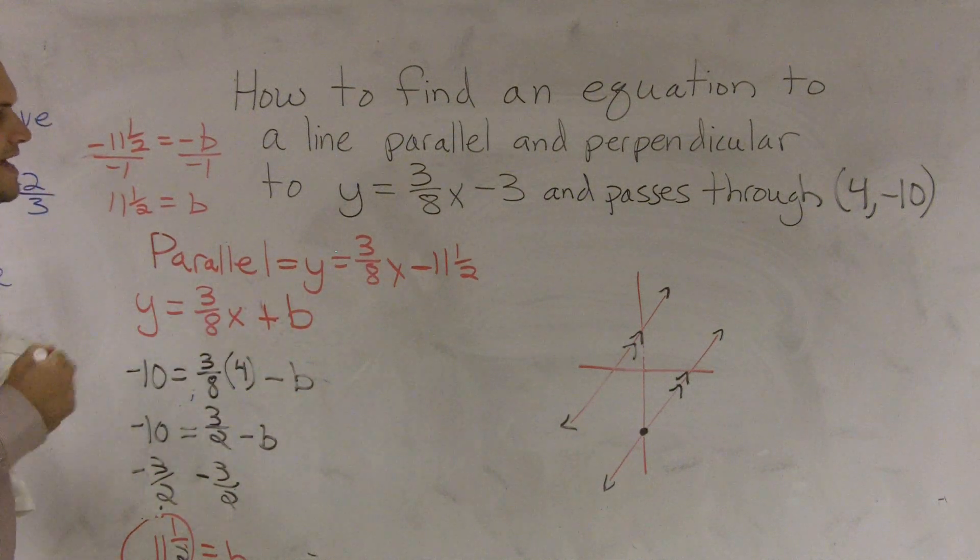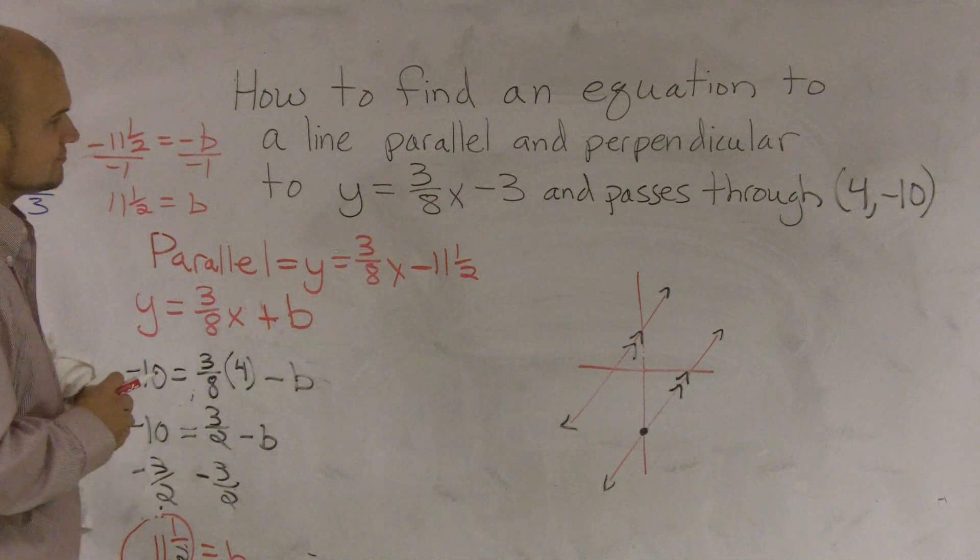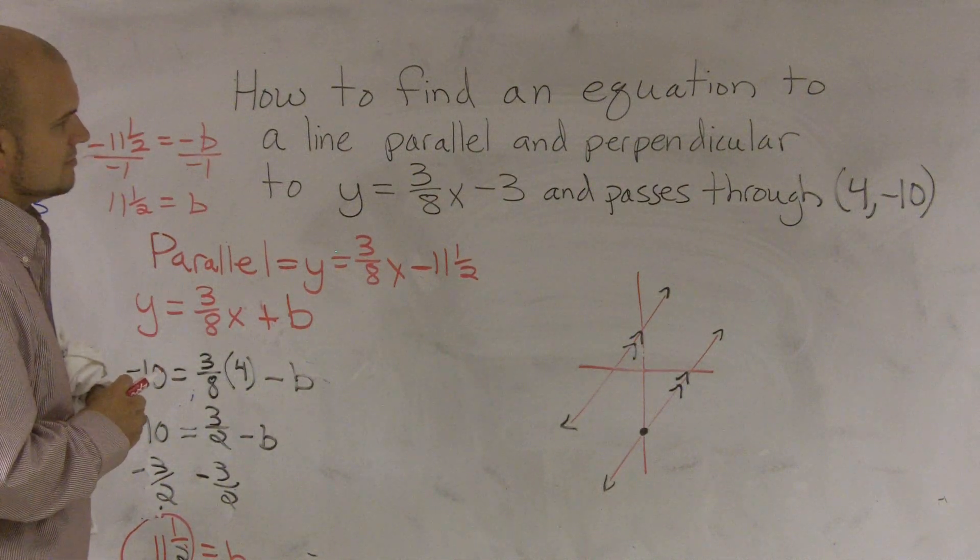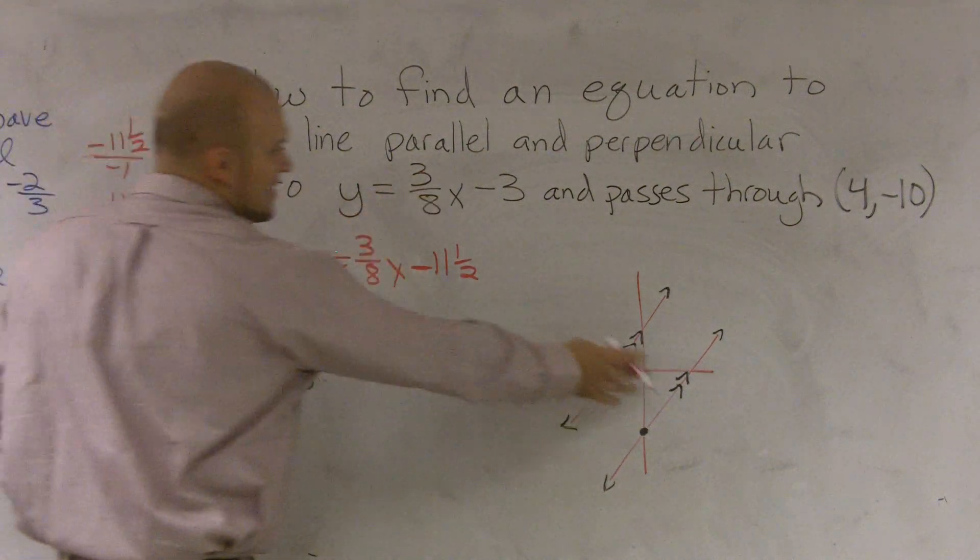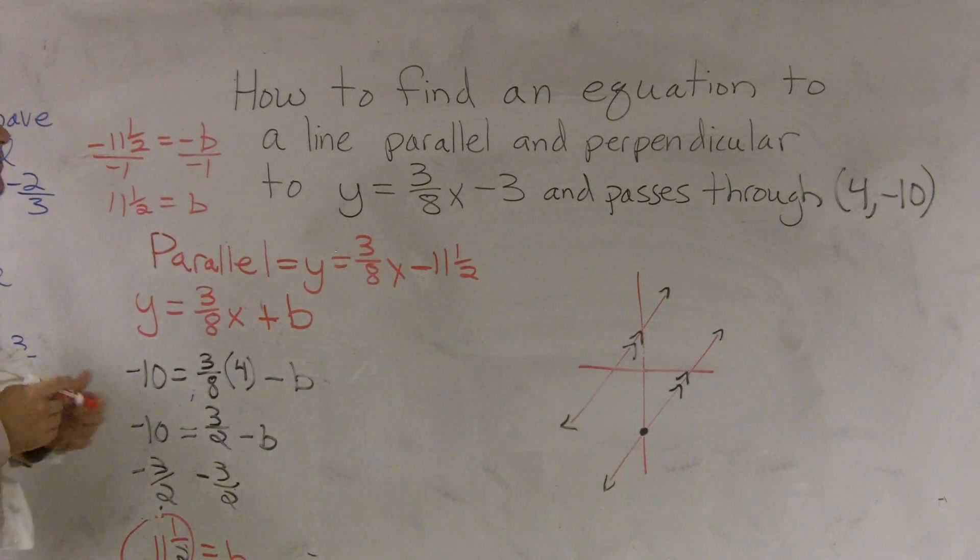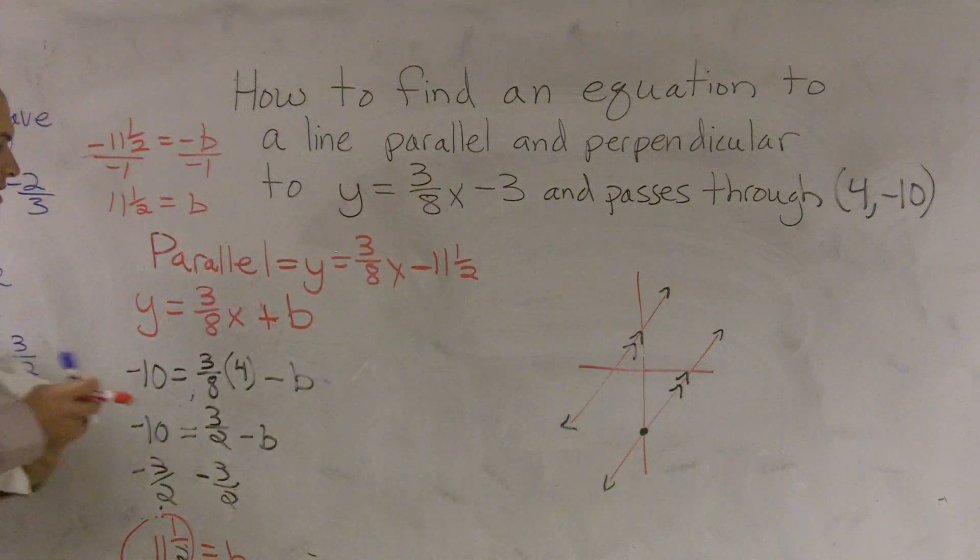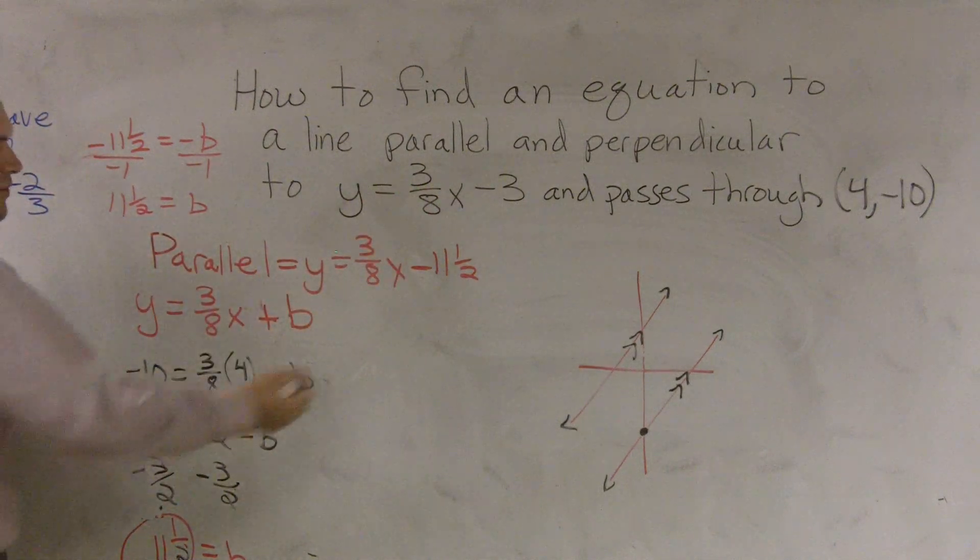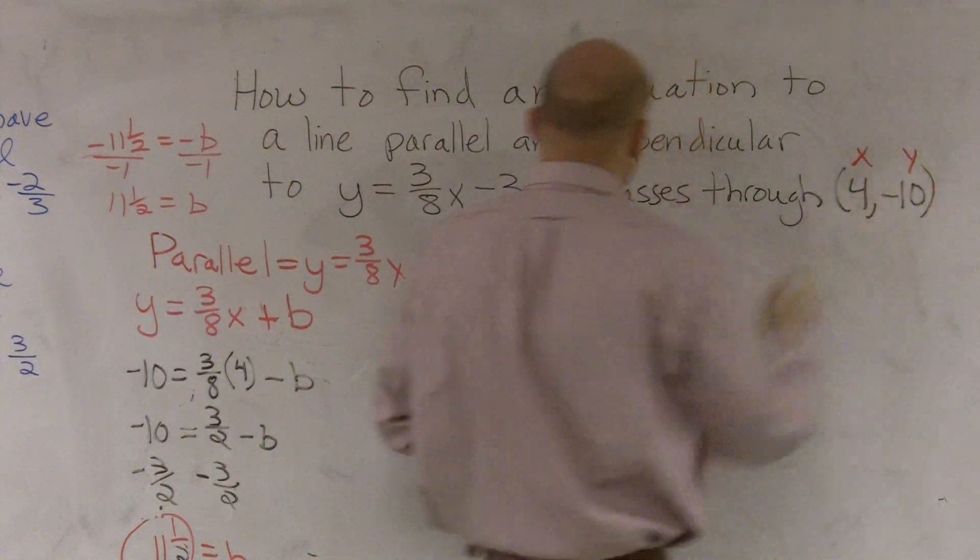So then the other thing it says is it has to go through the point (4, -10). So somehow my graph, like I said, this graph is not representative of this problem. It was just a quick little sketch. So therefore, my equation has to go through my point (4, -10). So therefore, what I'm going to do is I'm going to plug in my point, this is my x value and this is my y value. I'm going to plug in 4 for my x value and negative 10 for my y value.